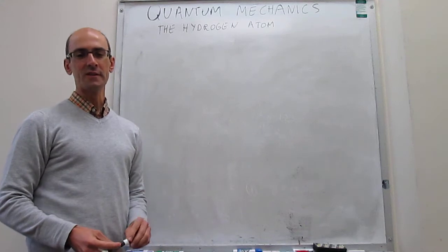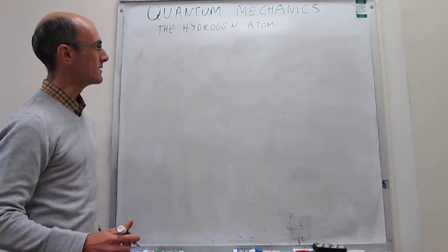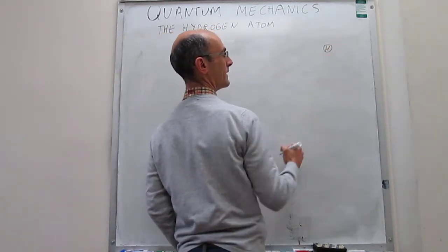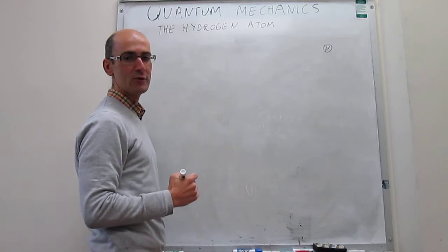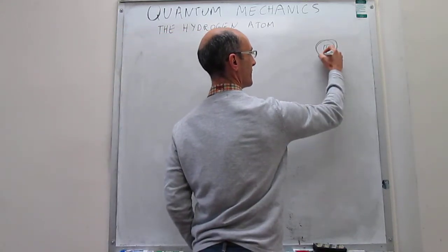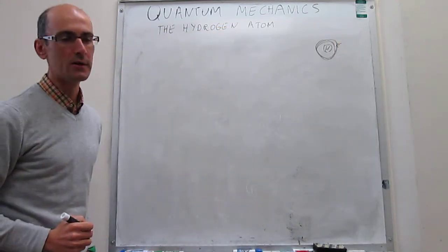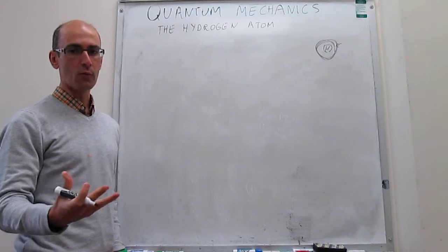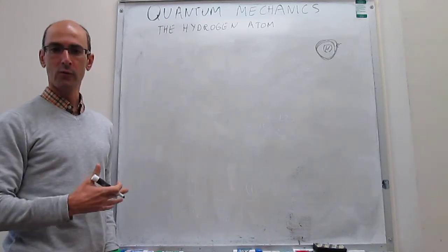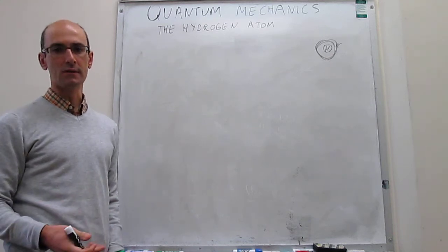We now begin a series of videos in which we explain the Schrödinger equation for the hydrogen atom. The hydrogen atom is composed of a nucleus where there is a proton, and then in the periphery there's going to be an electron, and that's what we're trying to solve the quantum behavior for. The way that we do this is the way we always do in quantum mechanics — we set up the Schrödinger equation and then attempt to solve it.